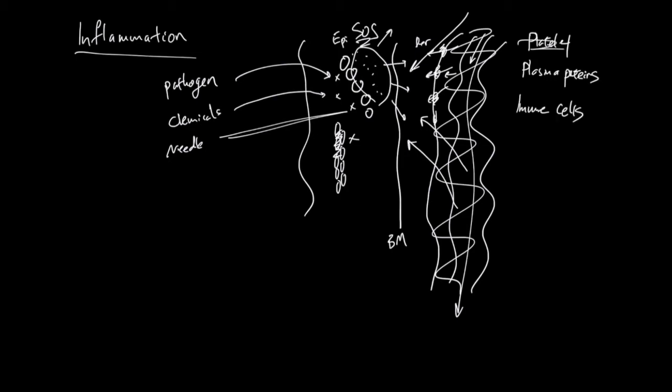So platelets try to line up and create kind of some kind of scaffolding wall around this region. And plasma proteins, they are antimicrobial. Just in case, if the problem is pathogen, then the plasma proteins can try to fight those pathogen.